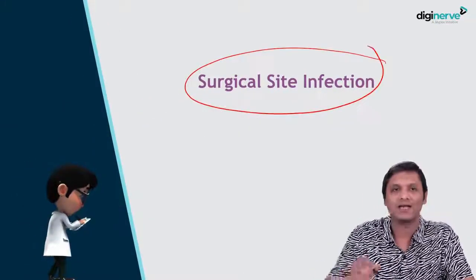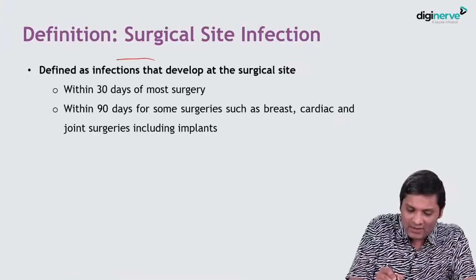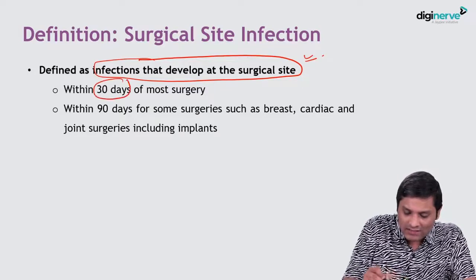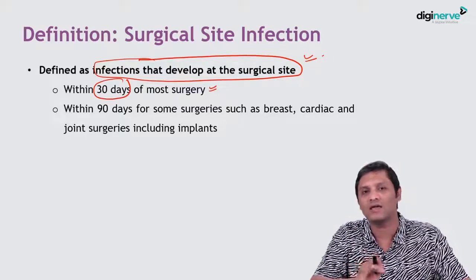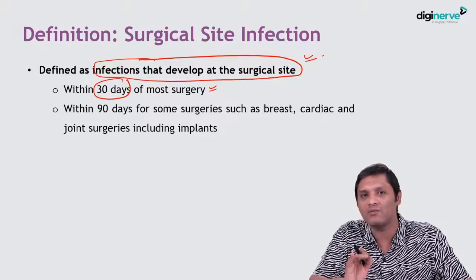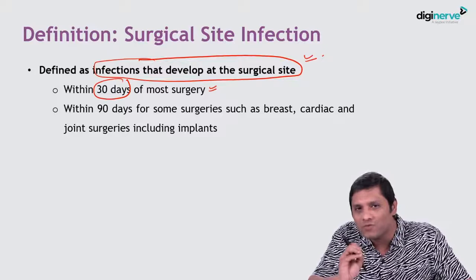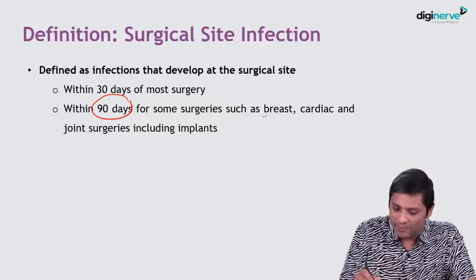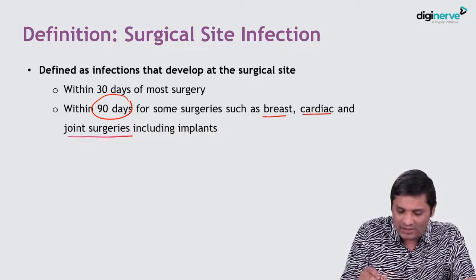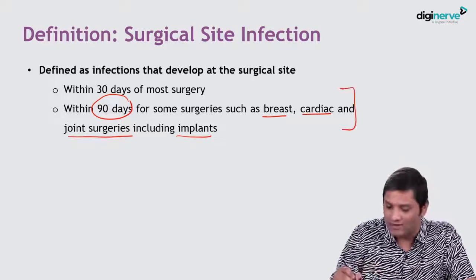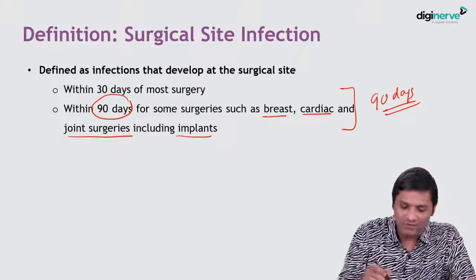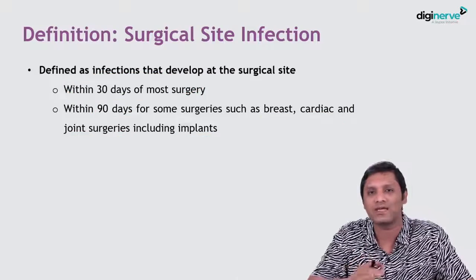Let us discuss surgical site infection. What is the definition of surgical site infection? SSI has been defined as any infection that develops at the surgical site within 30 days of surgery. For most surgeries, the cutoff is 30 days, except for breast, cardiac, and joint surgeries including implant surgeries, where SSI can occur within 90 days of the surgical procedure.